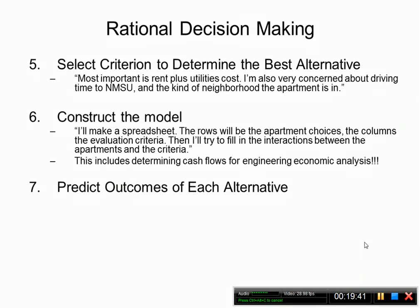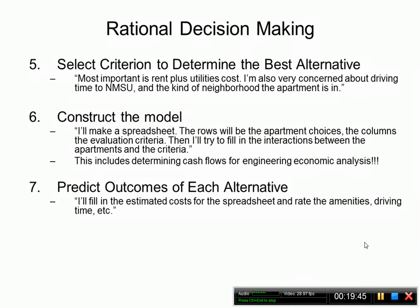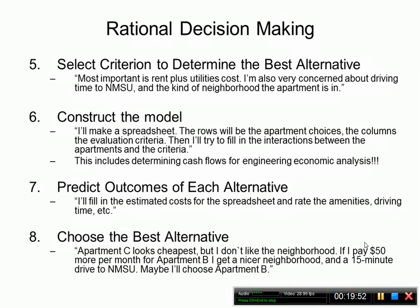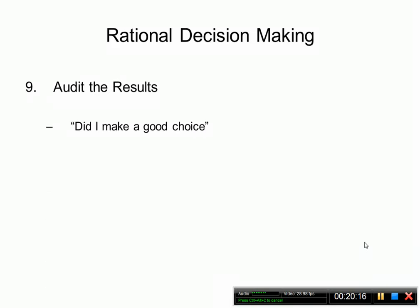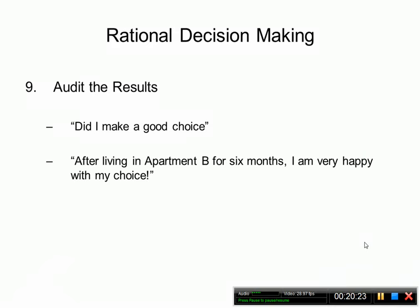Step seven: predict outcomes — fill in estimated costs in the spreadsheet and rate amenities, driving time, etc. Step eight: choose the best alternative — apartment C looks cheapest but I don't like the neighborhood; paying $50 more per month for apartment B gets a nicer neighborhood and a 15-minute drive to NMSU. I'll choose apartment B. Step nine: audit the result — after six months in apartment B, I'm very happy with my choice.